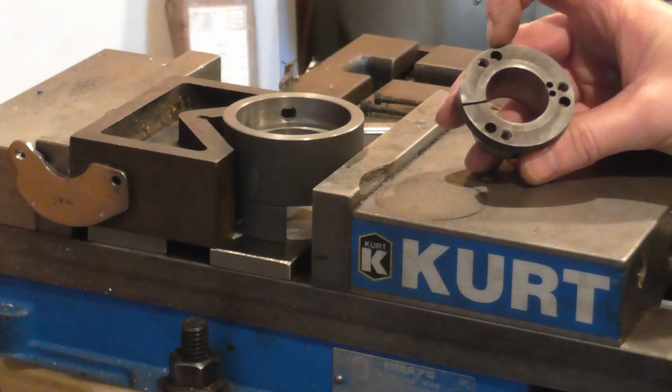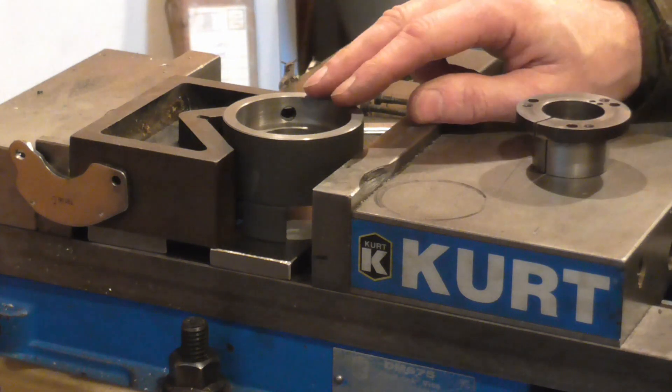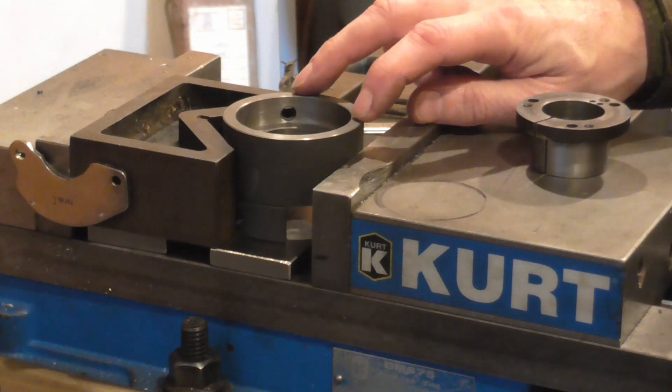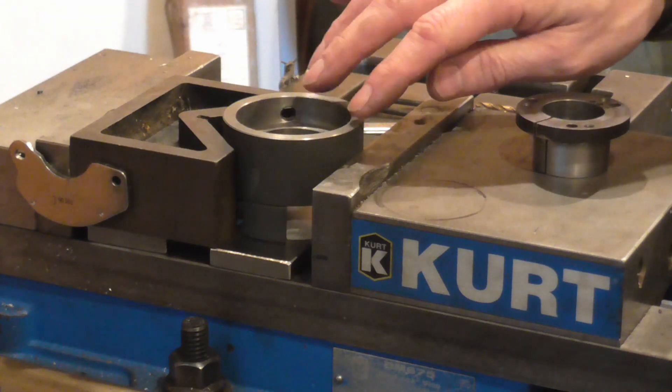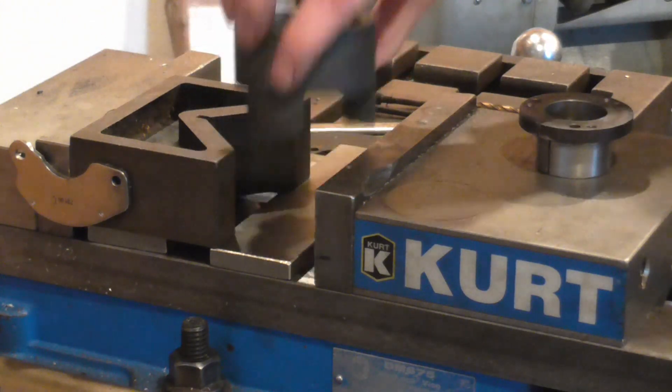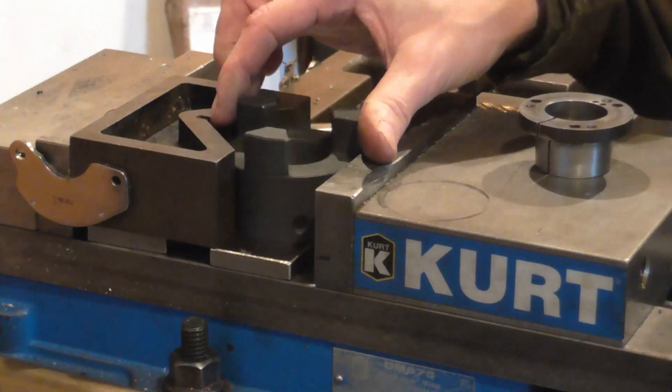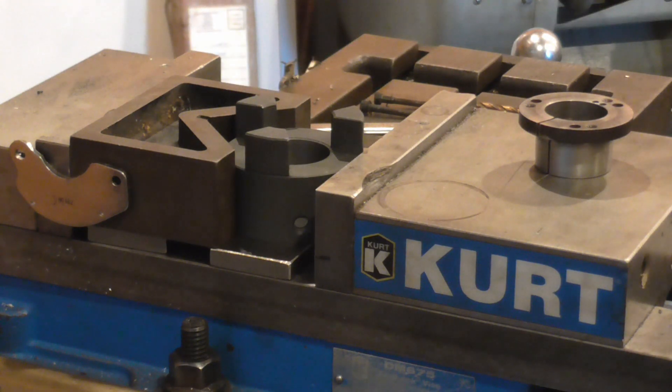And the PCD of the holes is 42mm. So what I've done is put the hub in upside down and picked up the centre. I'll show you once I invert it.